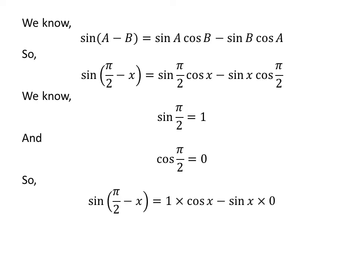Let's replace sin of half of pi and cosine of half of pi by their values in the above expression. So we got sin of half of pi minus x is equal to 1 times cosine of x minus sin of x times 0.